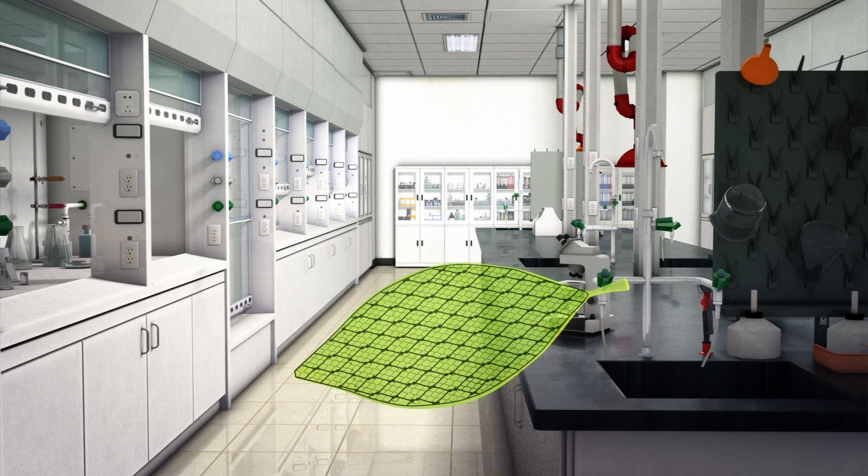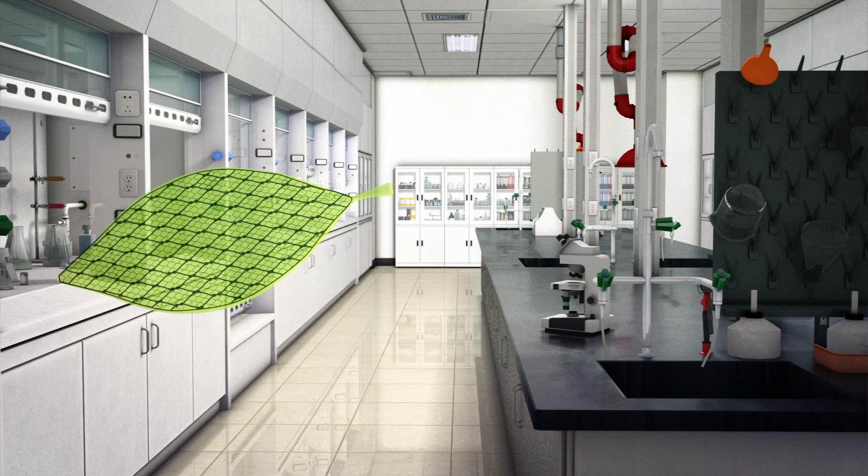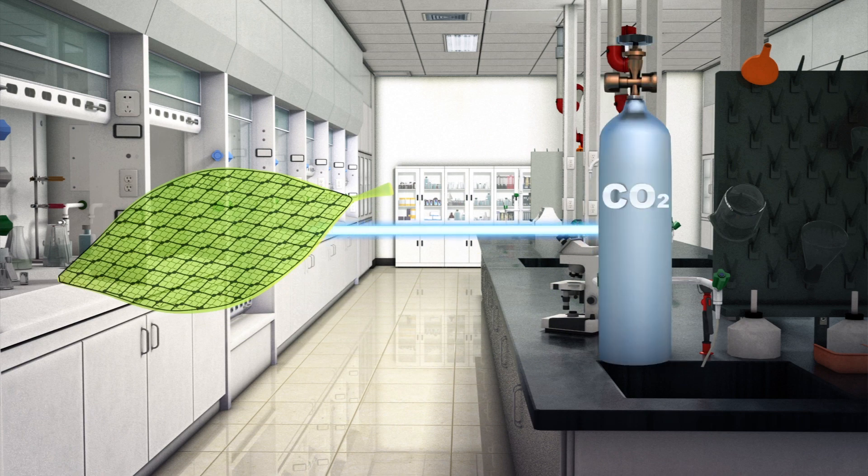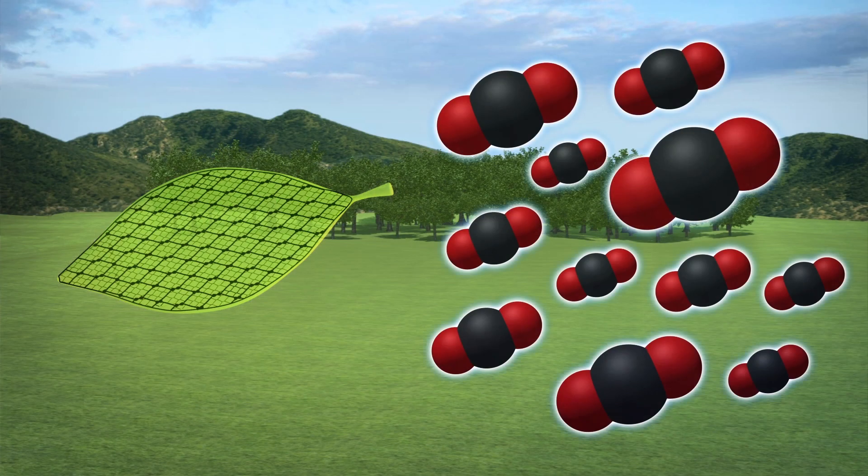According to Futurism, existing artificial leaves can mimic photosynthesis, but draw pure carbon dioxide from pressurized tanks in the lab. As such, they fail to be effective in the real world, where they need to be able to draw from more dilute sources.